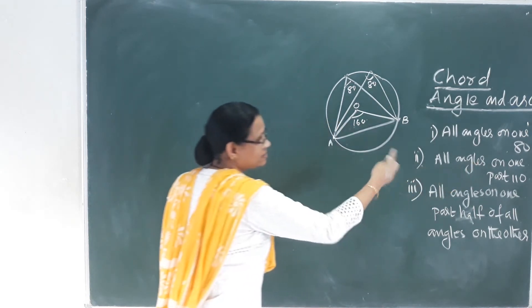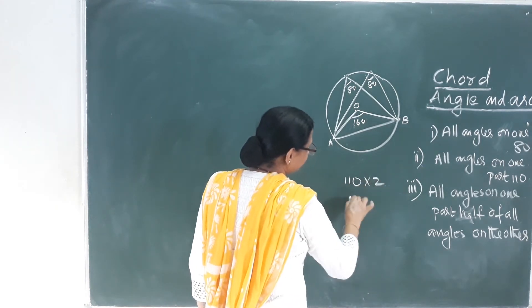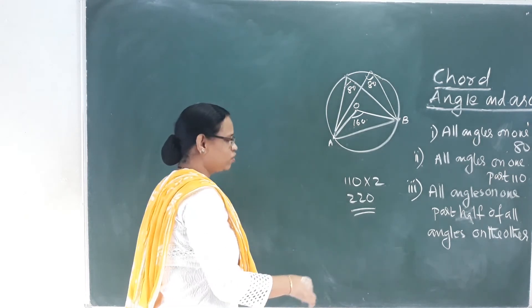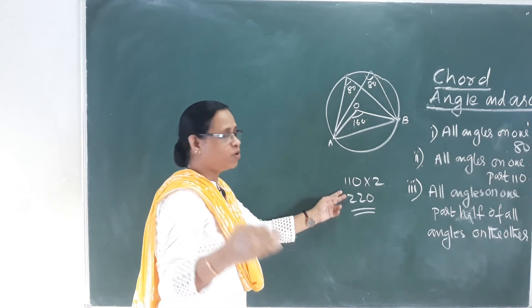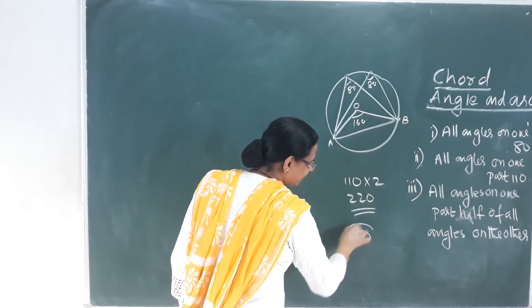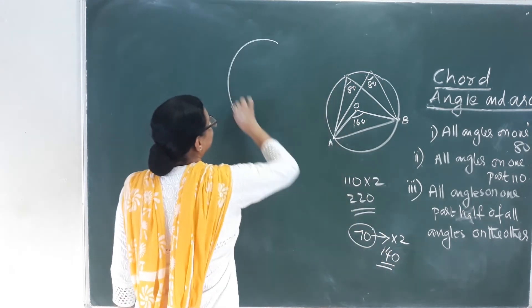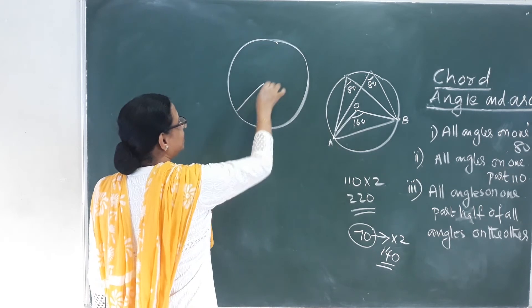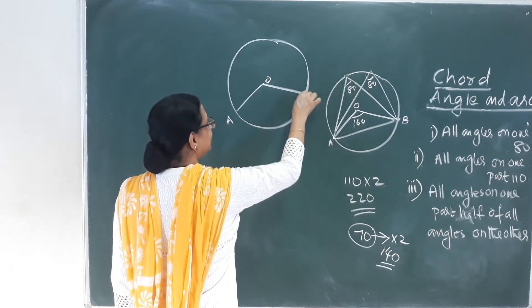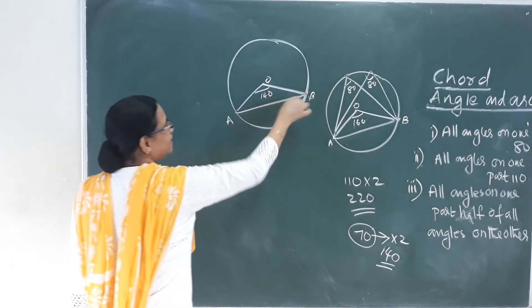For the inscribed angle of 110 degrees: the alternate segment gives an angle of 70 degrees. Then 70 degrees doubled gives a central angle of 140 degrees. Draw a circle, mark center O, draw radius OA, mark 140 degrees, and connect chord AB. The inscribed angle in that segment will be 70 degrees and the other part 110 degrees.